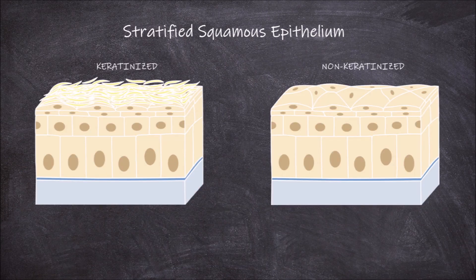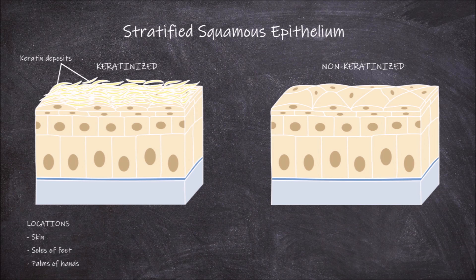Keratinized stratified squamous epithelium is the type that has a lot of keratin deposits built up in the upper layers of cells, creating a tough layer. This type of epithelium is found on the external surfaces of the body, what we call the skin, including that on the soles of the feet and palms of the hand.